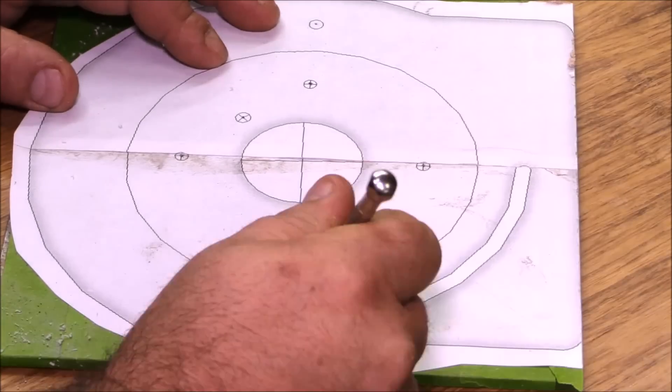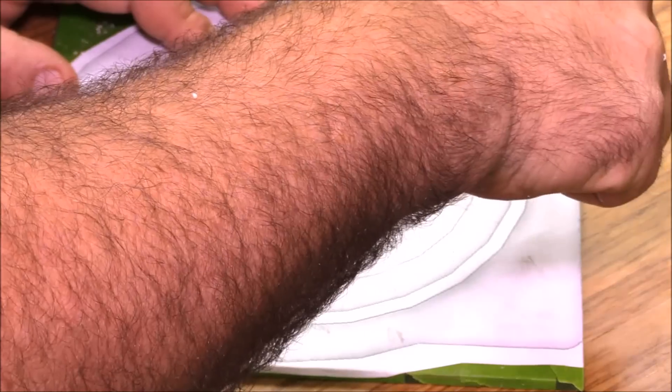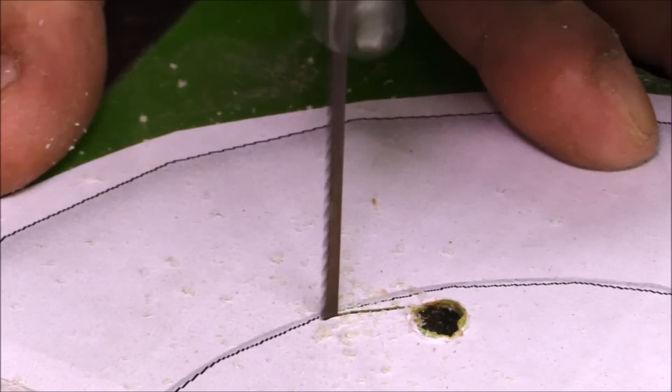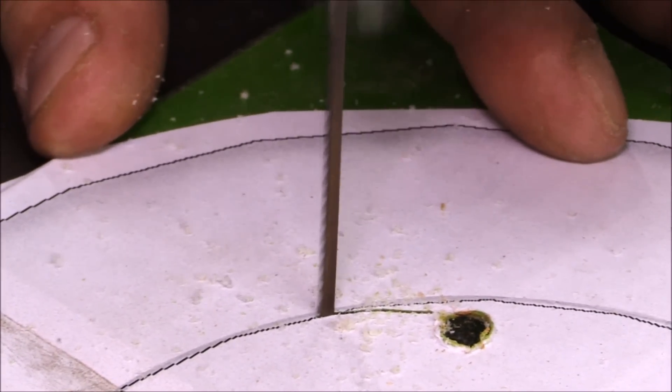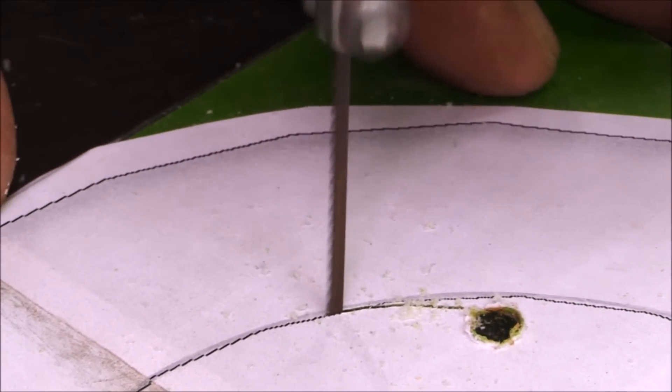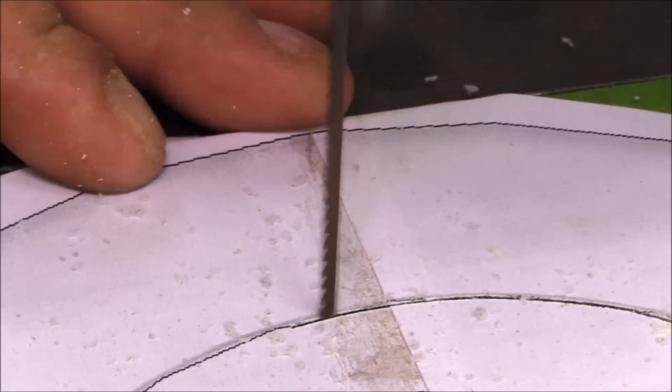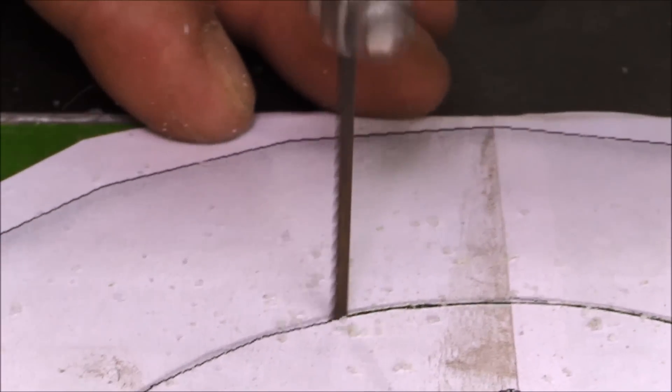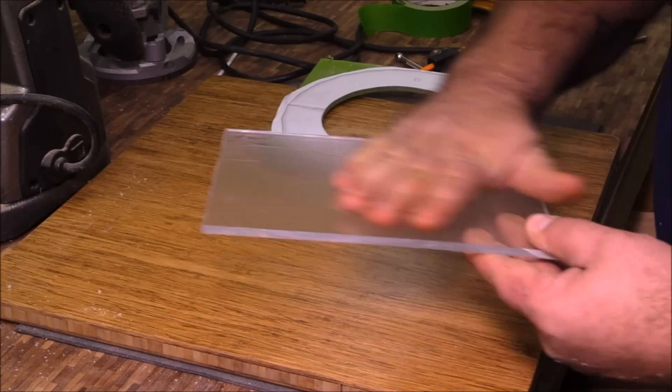I marked some holes out that I wanted to drill and then I took it over to the scroll saw and cut out the center of this. This is actually where the base plate of the router is going to sit inside of. Right now I'm going to make this a two-layer type of situation.